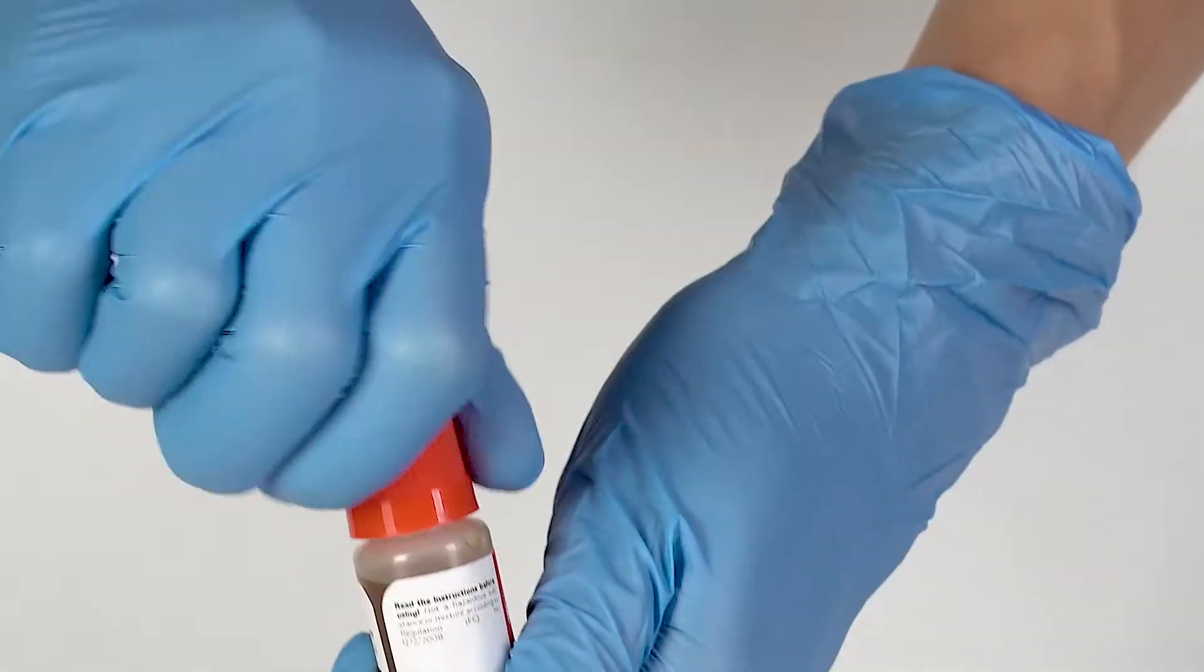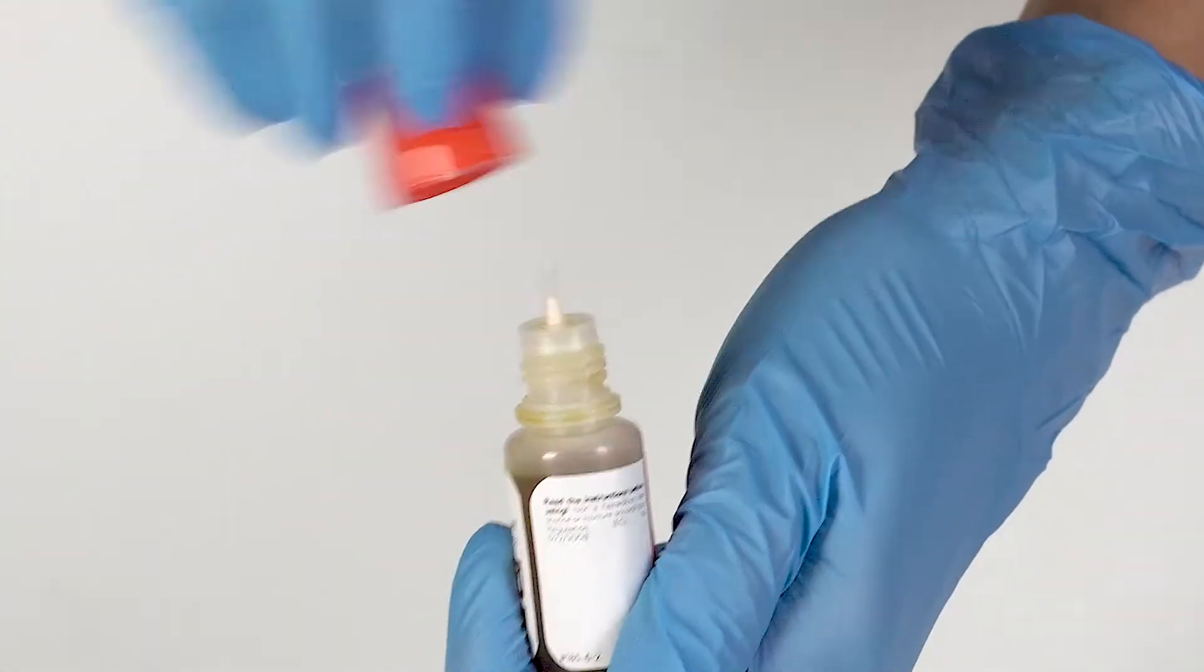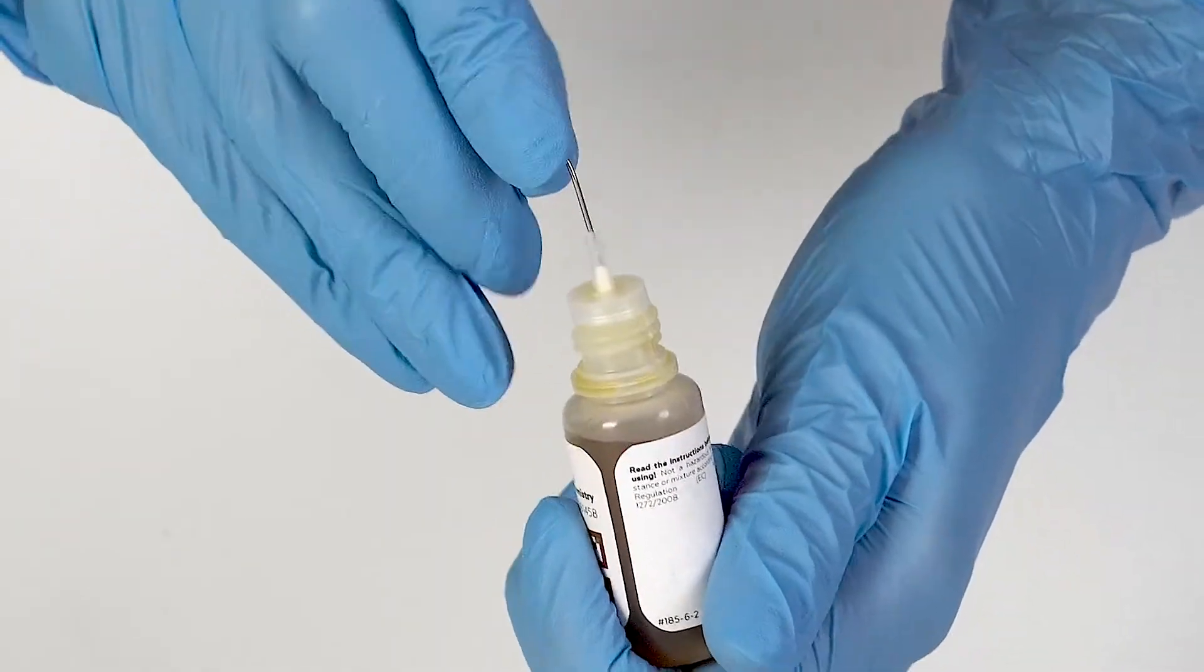To open a bottle containing a reagent, push the cap down and turn it. Pierce the bottle nozzle with an unbent paper clip.